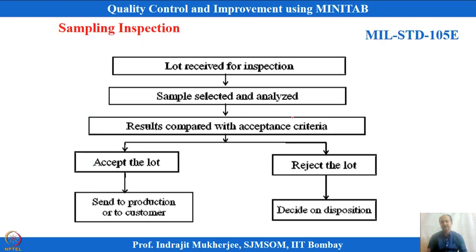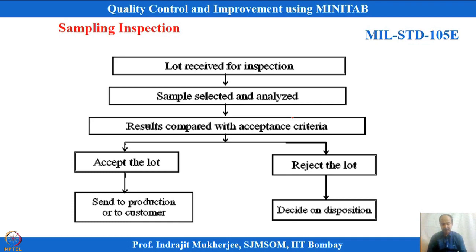A brief about inspection: this is known as sampling inspection. The latest plan is Military Standard MIL-STD-105E, a US standard based on the Dodge-Romig sampling plan. It provides guidelines on how to inspect products received from suppliers — this is an attribute sampling plan with given sampling plan criteria.